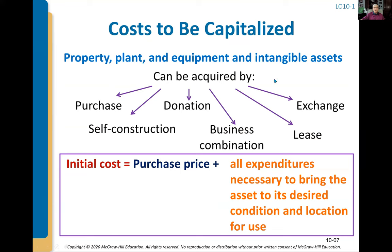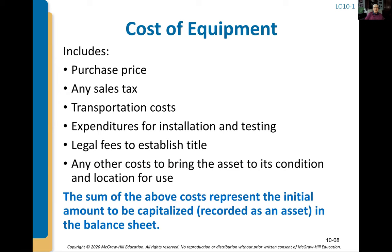Property, plant, equipment and intangible assets can be acquired many different ways: we can buy them, build them ourselves, or acquire them through a business combination when we buy another company. We can also lease factories — which we'll cover in Intermediate Accounting 2 — or exchange one piece of old equipment for someone else's equipment. There are a lot of different ways, so we have to think about how to account for each.